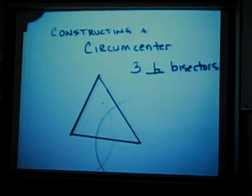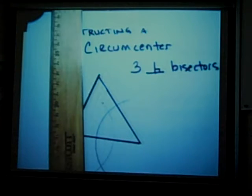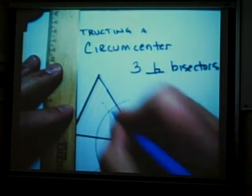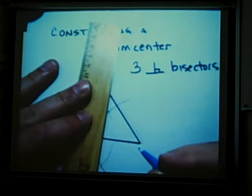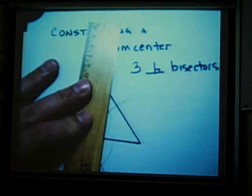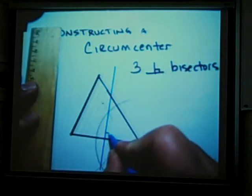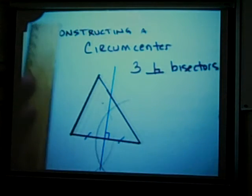And if I connect the points of intersection, I construct a line that is both perpendicular and bisecting a side.